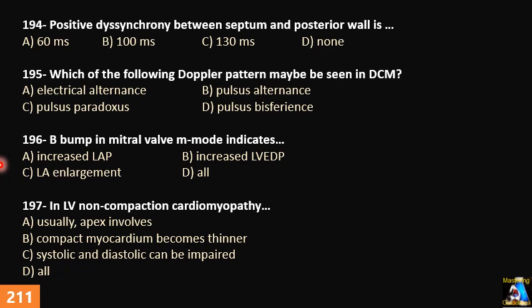Question 195: Which one of the following Doppler patterns may be seen in dilated cardiomyopathy? A) electrical alternance, B) pulsus alternans, C) pulsus paradoxus, or D) pulsus bisferiens. Question 196: B-bump in mitral valve M-mode indicates: A) increased left atrial pressure, B) increased left ventricular end-diastolic pressure, C) left atrial enlargement, or D) all of them.